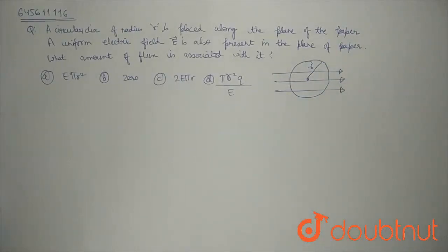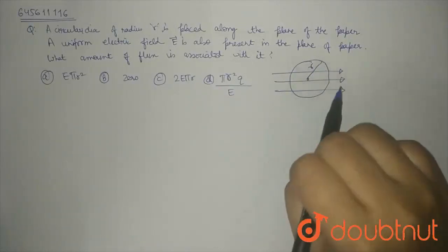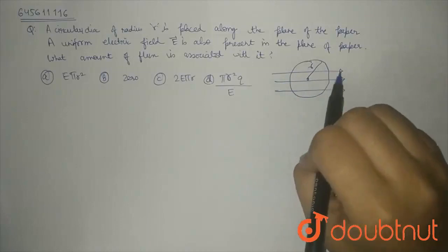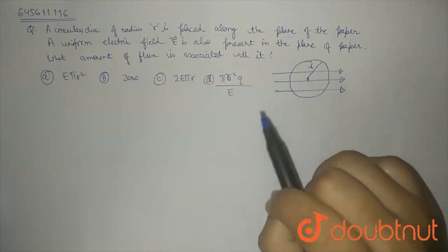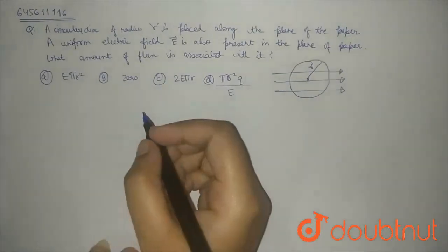A uniform electric field E is also present in the plane of the paper. The paper and electric field are both in the plane of the paper. What amount of flux is associated with it? We have to find flux.